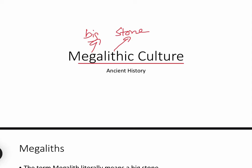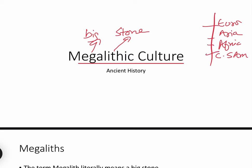Were megalithic structures only in the Asian continent or only in India? The answer is no. They were also found around Europe, Asia, Africa, and in Central and South America. So these are certain places in the world where megalithic culture was practiced.